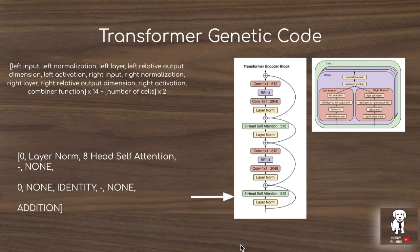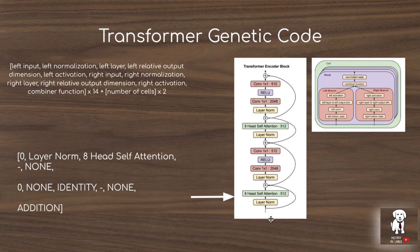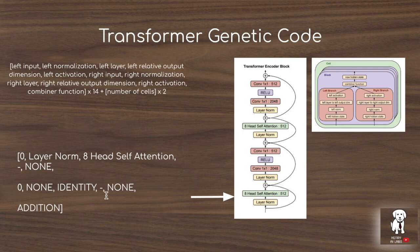Now we'll look at how you might encode the transformer in this genetic coding space. The genetic code is made up of the left branch and the right branch — the top line denotes the left branch, the bottom line denotes the right branch, and the addition is the combiner function that combines the two branches. On the left side, the input is zero because we're on the first level of the transformer, meaning we take the baseline input to the block. We choose layer normalization, then select the eight-head self-attention layer, and there is no activation at the end of the left branch. In the right branch, we take zero as the input, pass it through an identity connection, and there is no activation applied to this identity projection. We then use addition to combine the left and right branches to form the first component of this encoder block.